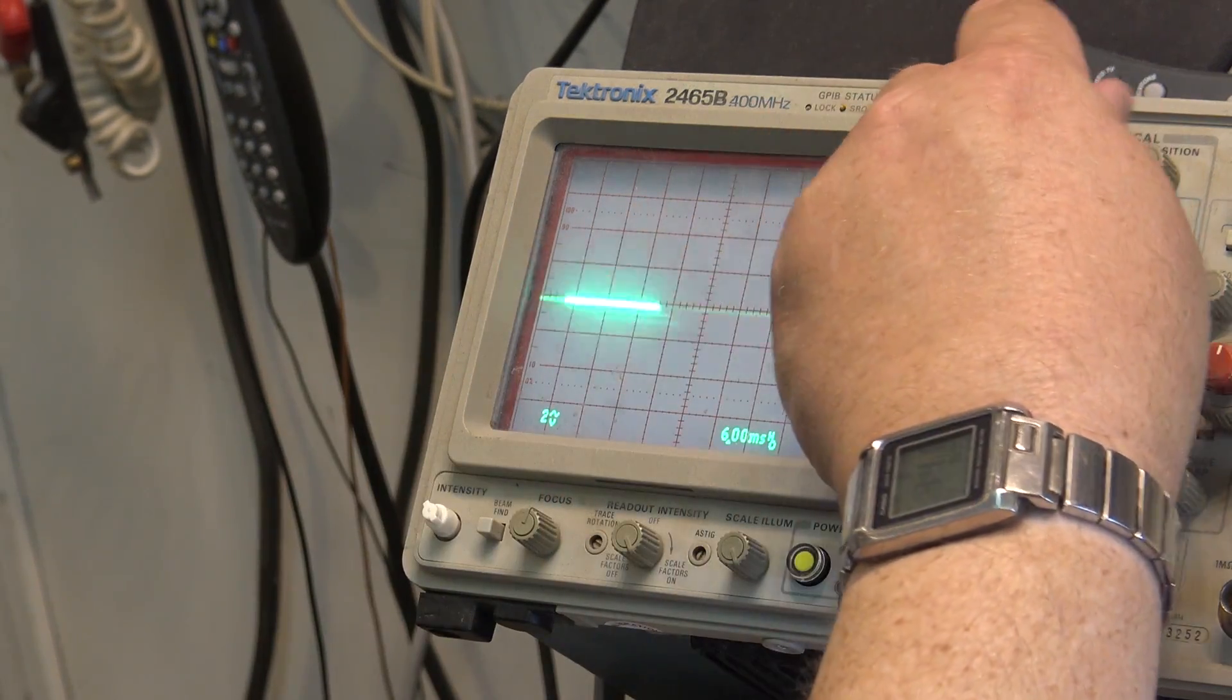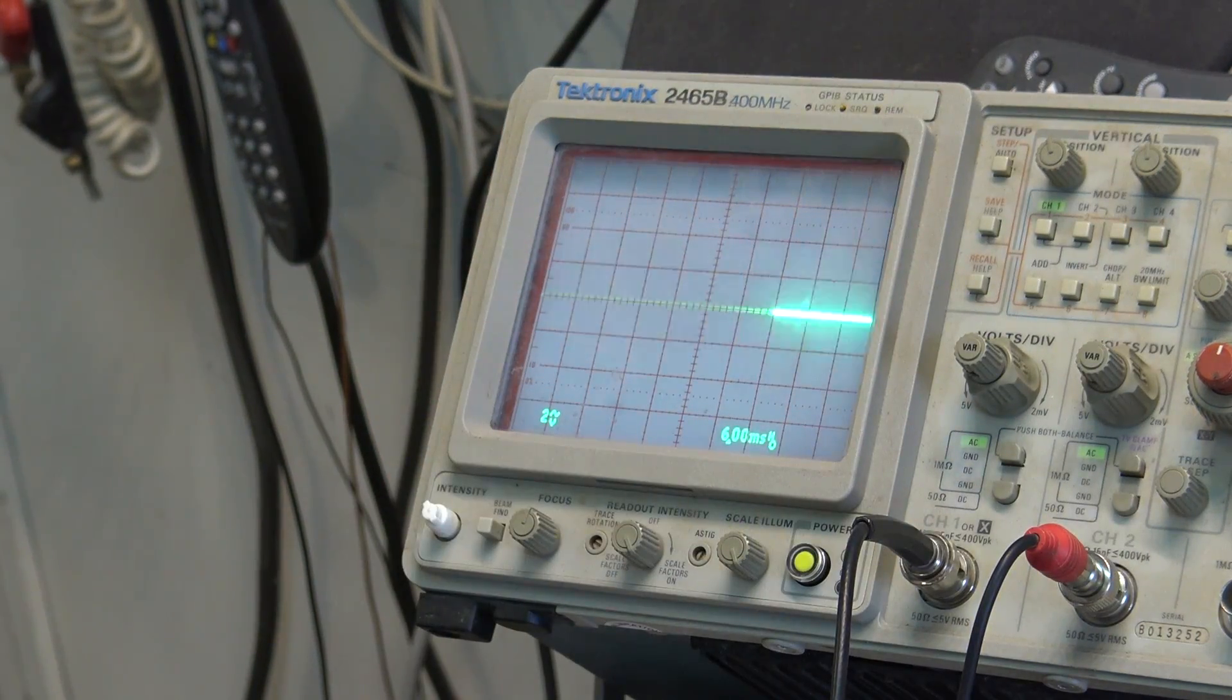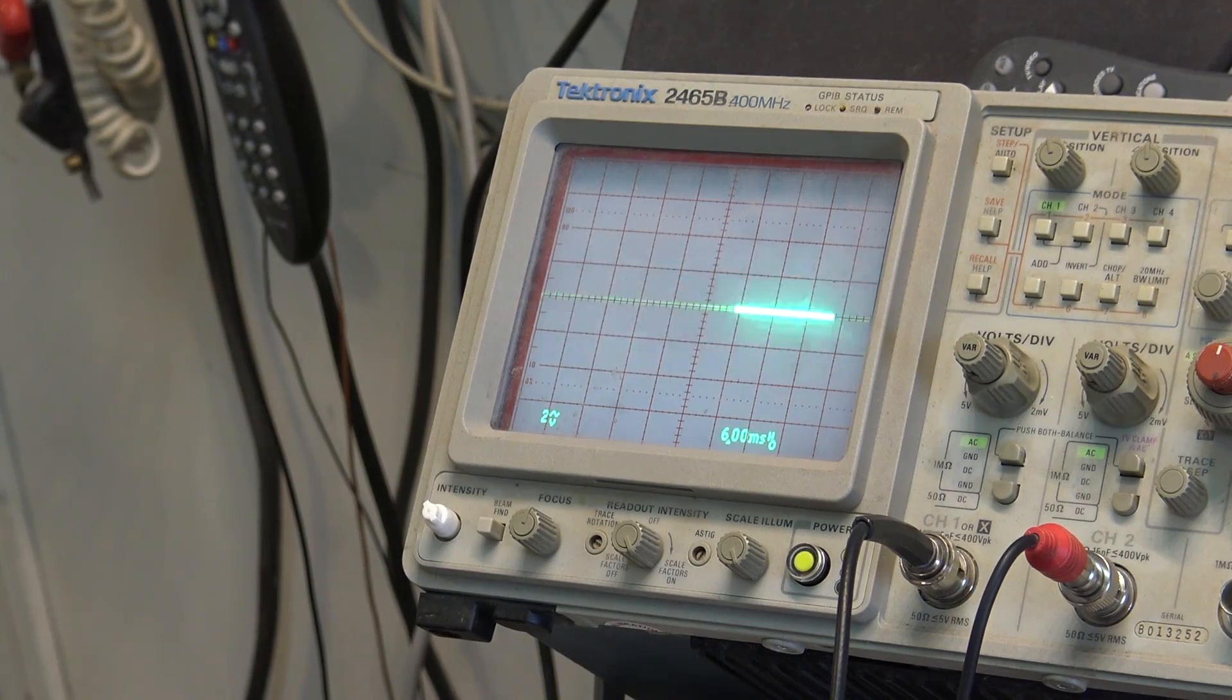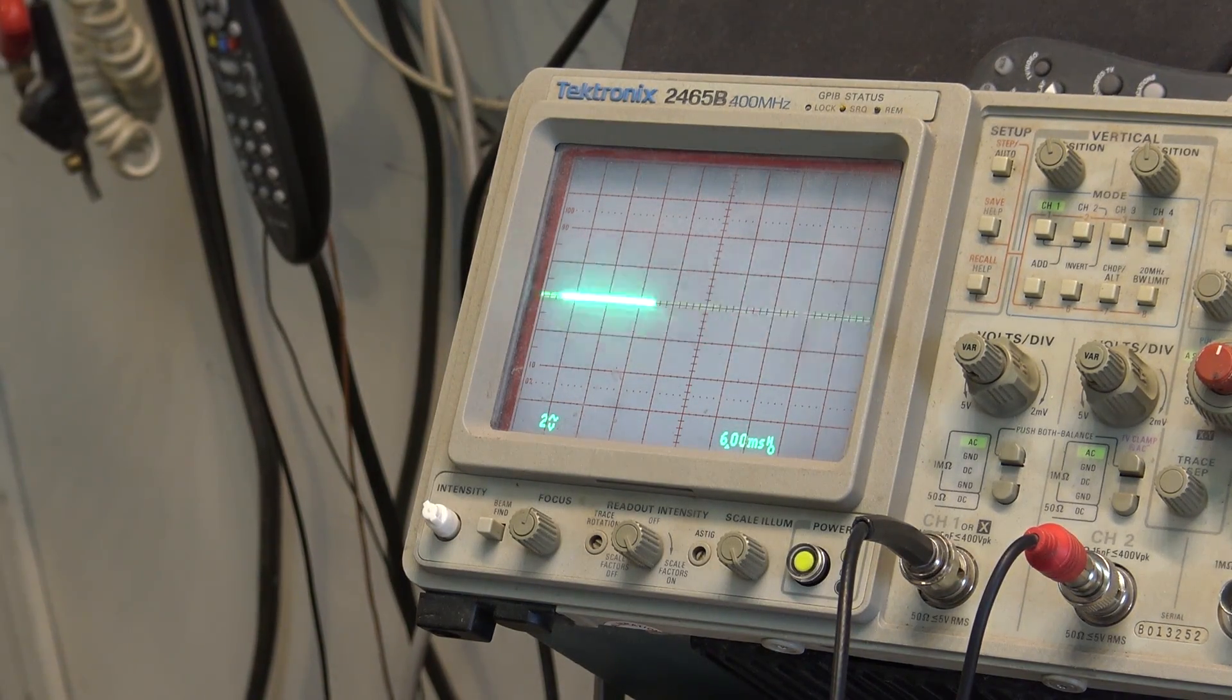So this is x10. This is on the 2 volt range, so every division is 20 volts that we see on here. Let's take a look at what type of output.